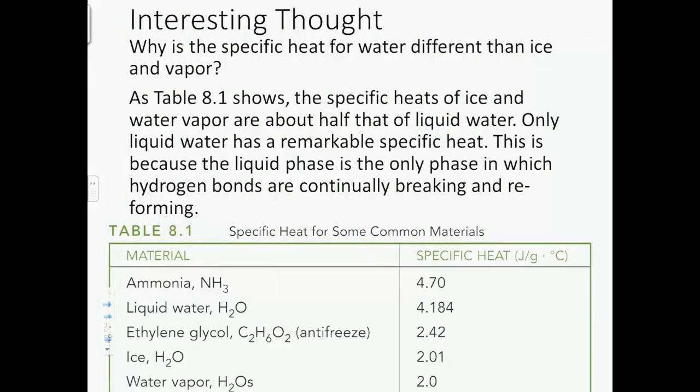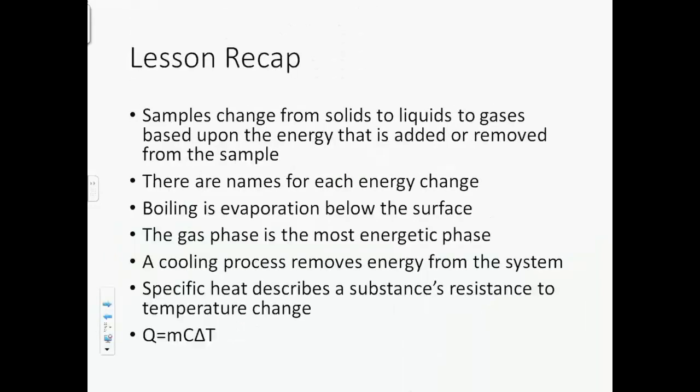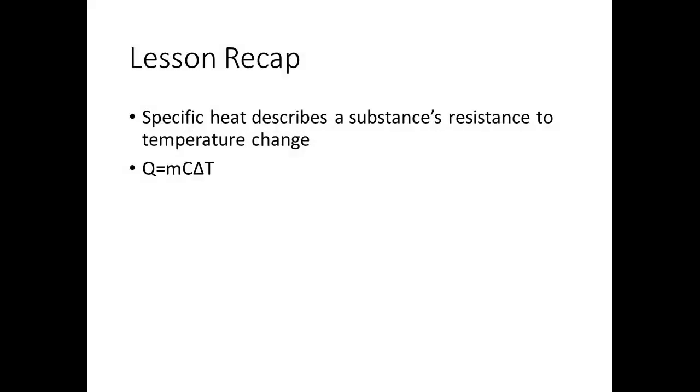This is the slide I mentioned earlier about why is the specific heat of water different than ice and vapor. As Table 8.1 shows, the specific heats of ice and water vapor are about half that of liquid water. Only liquid water has a remarkable specific heat. By remarkable, we mean so high. This is because the liquid phase is the only phase in which hydrogen bonds are continually breaking and reforming. With your solid phase, they're not constantly breaking. So specific heat describes the substance's resistance to temperature change, that energy inertia that we talked about, which is governed by the equation Q equals mc delta T.